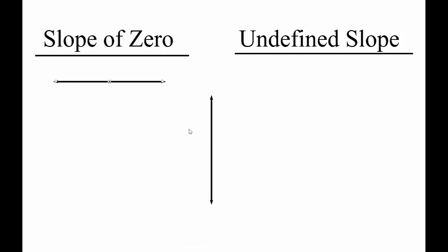Perfectly steep lines have an undefined slope. We say it's undefined because we don't have a number to describe perfect steepness.